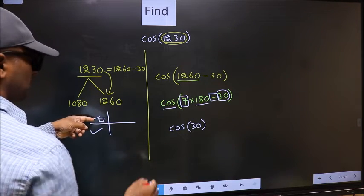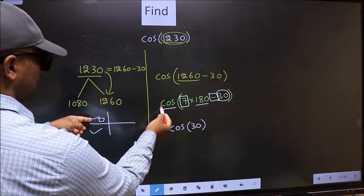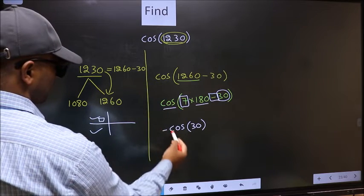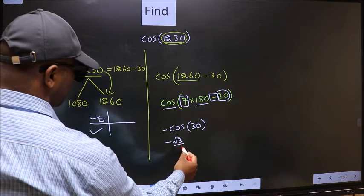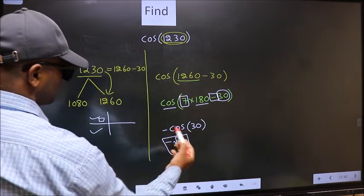And in the second quadrant, cos is negative. So we should put negative. So negative cos 30 is root 3 by 2. This is our answer.